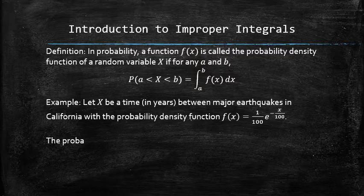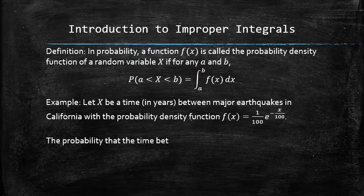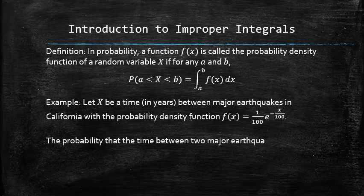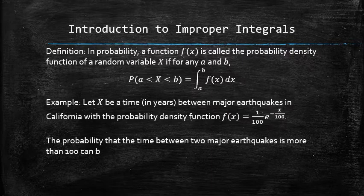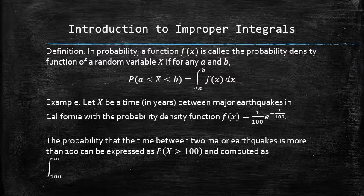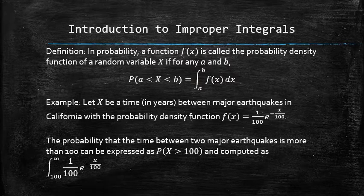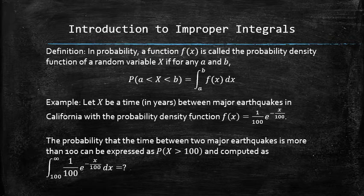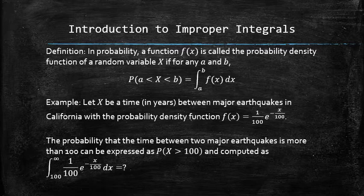Therefore, the probability that the time between two major earthquakes is more than 100 years can be expressed in the following way and set up as the following definite integral with the lower limit 100 and the upper limit infinity.